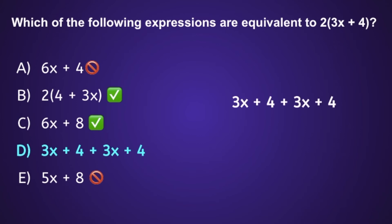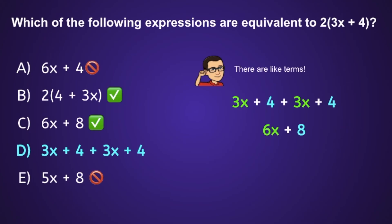The last possible answer is 3x plus 4 plus 3x plus 4. Right away I think there are a lot of terms — are there any like terms I can combine to simplify? Like terms are terms that either have the same variable or no variable at all. We can see 3x and 3x are like terms, and 3x plus 3x equals 6x. Also, 4 and 4 are like terms, and 4 plus 4 equals 8, giving us the final simplified expression 6x plus 8. That's exactly the same as the original expression.